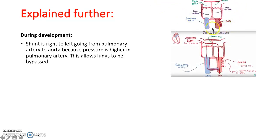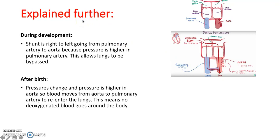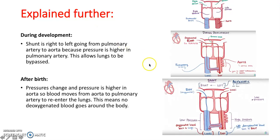As you can see here, this is a normal adult and this is during development. Oxygenated blood comes in from the placenta into the right atrium and through the foramen ovale into the left atrium. It goes down into the aorta, or into the right ventricle into the pulmonary artery, and a small amount goes to the lungs, but most of it goes through the ductus arteriosus and into the aorta. After birth, the pressure changes and is higher in the aorta, so blood moves from the aorta to the pulmonary artery to re-enter the lungs. This means no deoxygenated blood goes around the body — this is why it's an acyanotic heart defect.